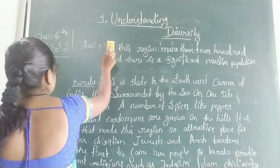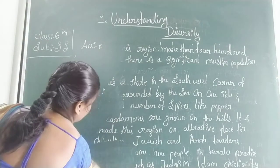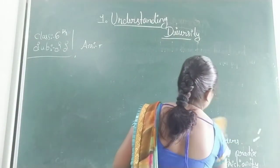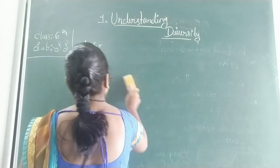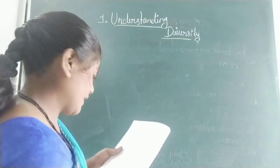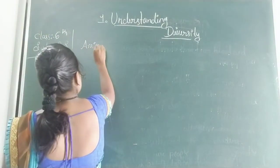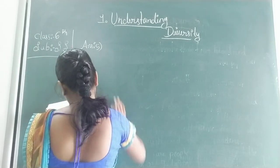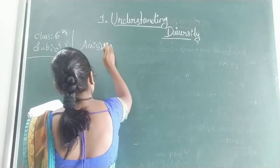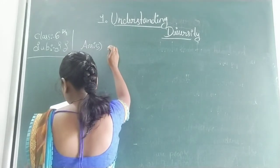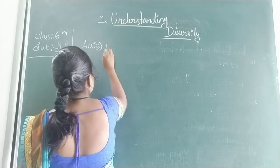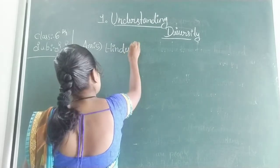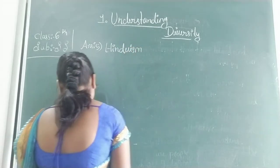People in Kerala practice different religions such as Judaism, Islam, Christianity, and Hinduism. Buddhism is also practiced here.